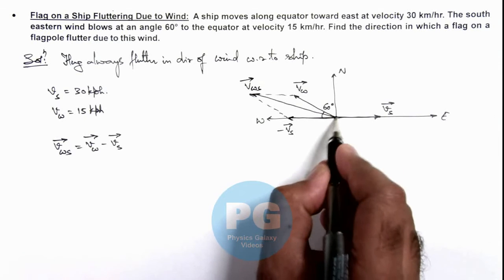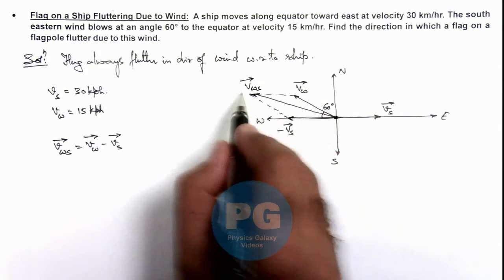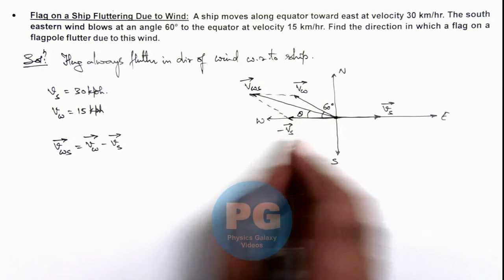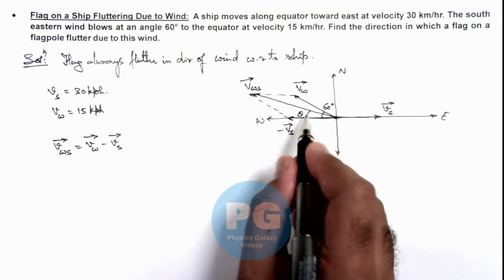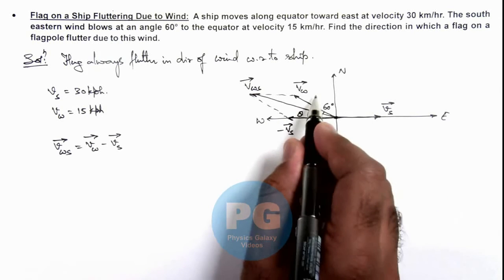If here is the flagpole, then the flag will flutter in this direction at an angle theta to the equator, from west toward north—this is north of west.